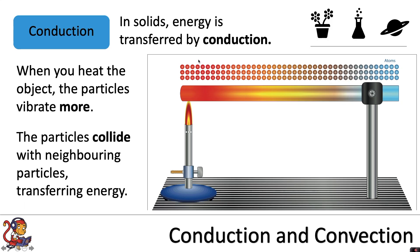If this represents the regular arrangement of atoms in our solid metal bar, as we're heating this end the atoms will start to vibrate more. They'll still be in a fixed position but they'll vibrate more. They will collide with neighbouring particles and transfer the energy along the rod. Until eventually if you were to hold the rod at this end it would be very hot as the heat energy has been conducted through the metal.